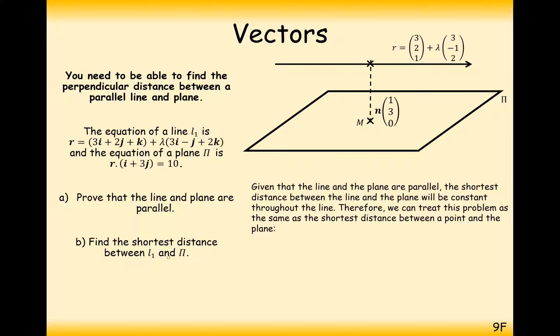So how are we going to approach this next problem in part B? Given that the line and the plane are parallel, the shortest distance between the line and the plane will be constant throughout the line. Therefore, we can treat this problem as the same as the shortest distance between a point and the plane. So that makes it really nice and easy.